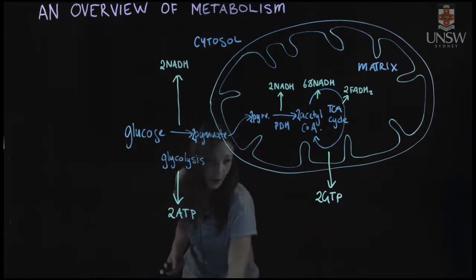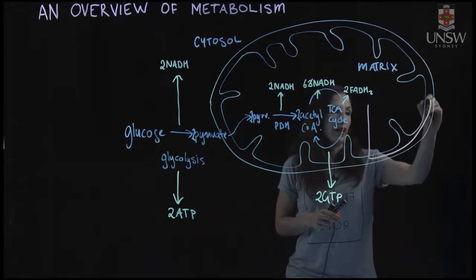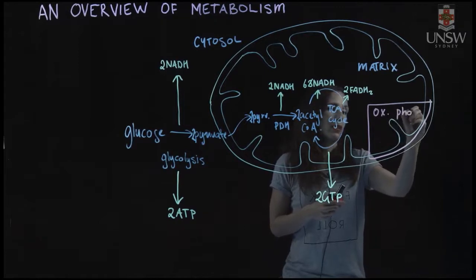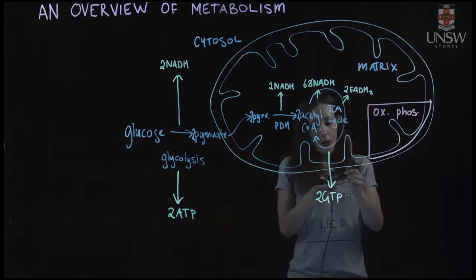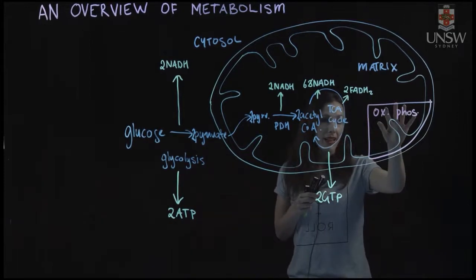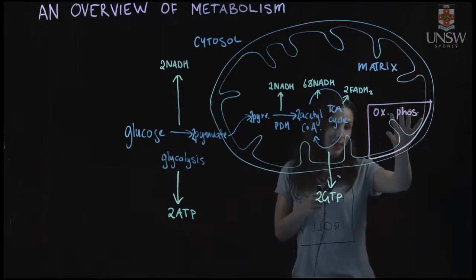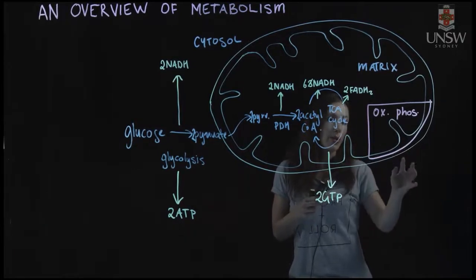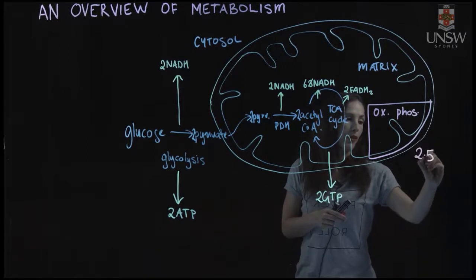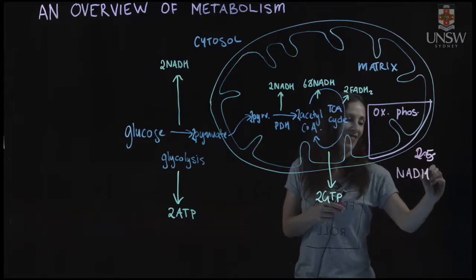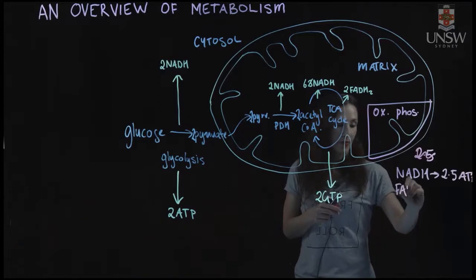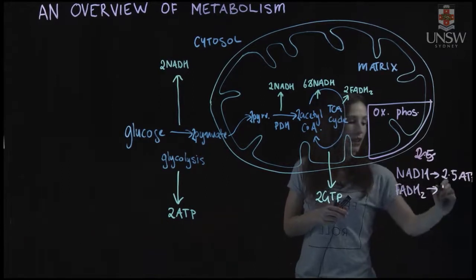The other process occurring here is oxidative phosphorylation. In the mitochondrial matrix we have the electron transport chain and ATP synthase. Our reduced electron carriers, NADH and FADH2, transfer their electrons onto the electron transport chain. We get a proton gradient produced across the inner mitochondrial membrane, and that drives production of ATP by ATP synthase. From 1 NADH, we power the production of 2.5 ATP, and from 1 FADH2, we power the production of 1.5 ATP.